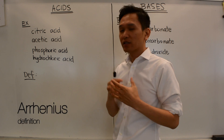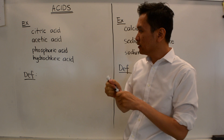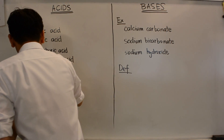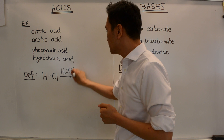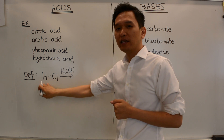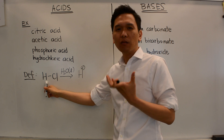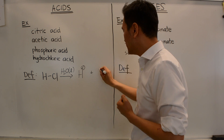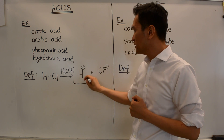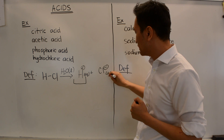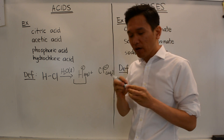The most simple definition of acids and bases is defined by a scientist named Arrhenius. The Arrhenius definition for an acid is that it produces a proton when dissolved in water. The most common example is hydrochloric acid. Hydrochloric acid is hydrogen bonded to chlorine. When dissolved in water, the hydrogen and chlorine break apart — hydrogen becomes a positive cation and chlorine is your anion. Whenever you produce a proton in water, according to Arrhenius, you have an acid.